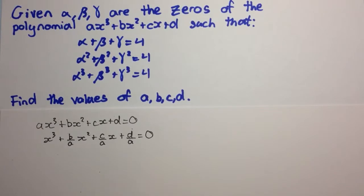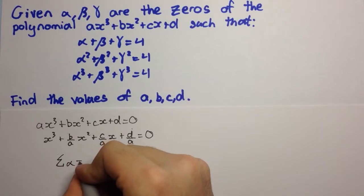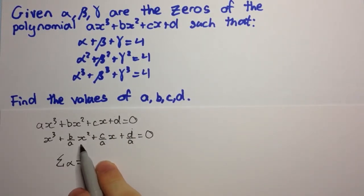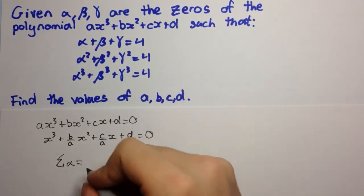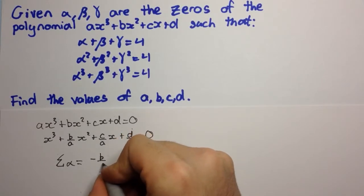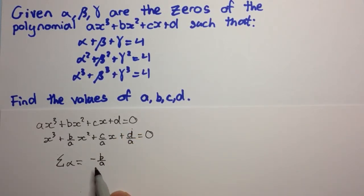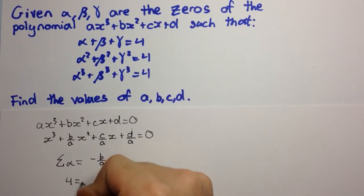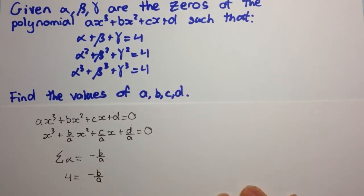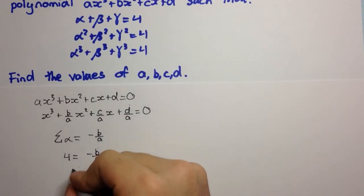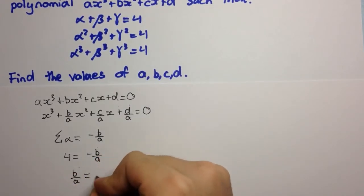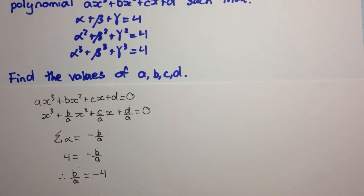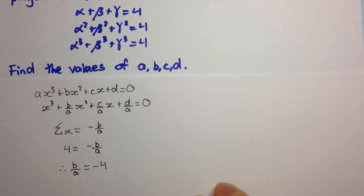Now let's consider the sum of roots. If we look at the sum of roots, that's equal to minus the coefficient of x squared divided by the coefficient of x cubed. So it's minus b over a all over 1, so just minus b over a. Now, we're given in the question that the sum of roots is equal to 4. So we have 4 is equal to minus b on a, and therefore b on a equals minus 4.